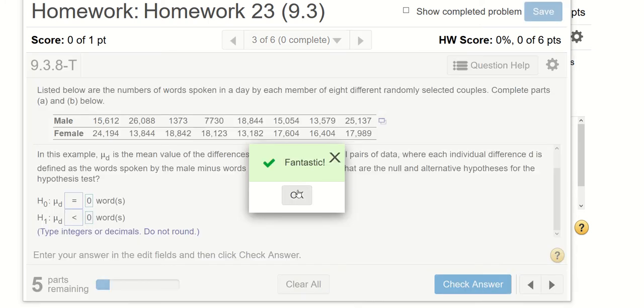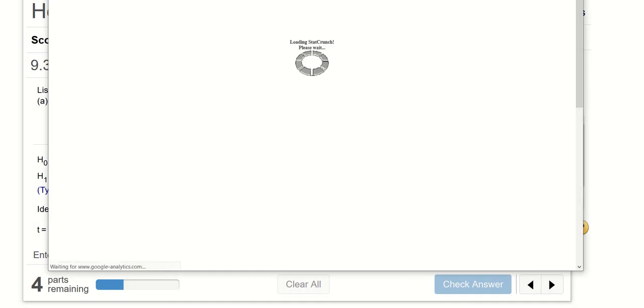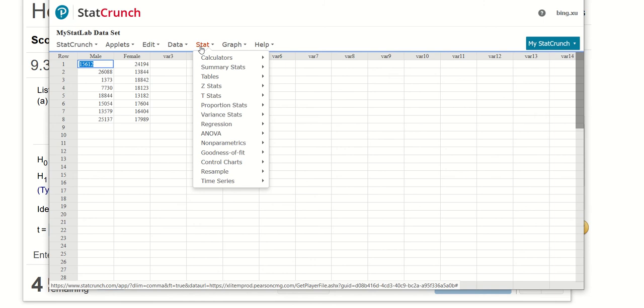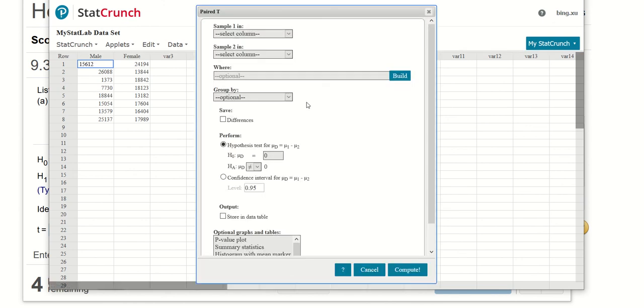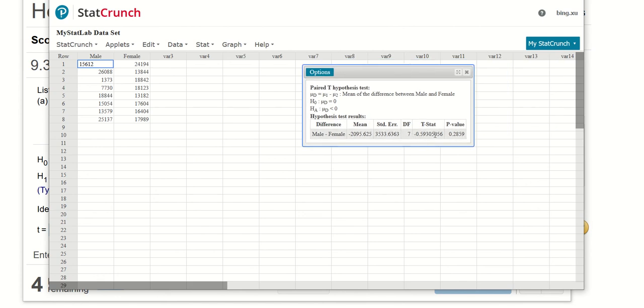Now next question, identify the test statistic. So here we will go to StatCrunch. You can click here to open the data in StatCrunch. You go to stat, t-stat, pair because it's matched pairs, paired sample one in male, sample two in female, and for the hypothesis test mu d is equal to 0, the alternative hypothesis mu d is less than 0.